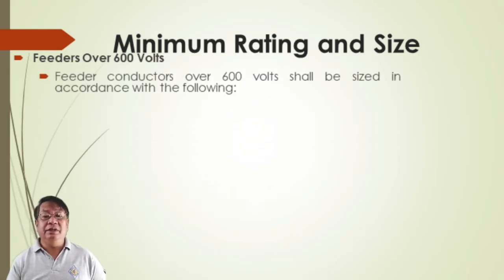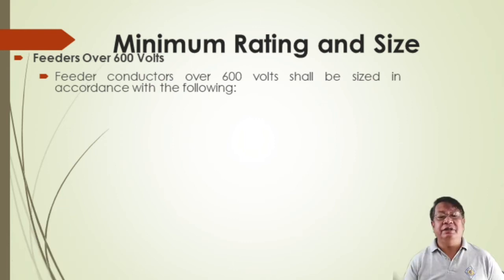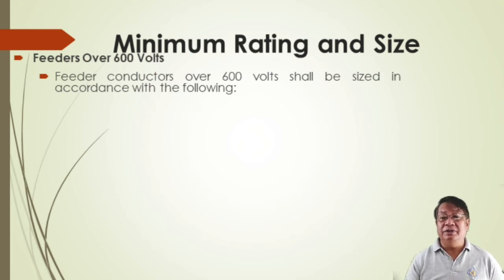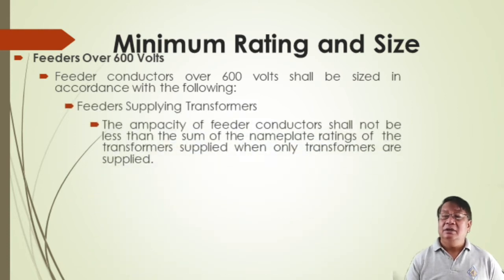If it is over 600 volts, feeder conductors over 600 volts shall be sized accordingly. For feeder-supplied transformers, the ampacity of feeder conductors shall not be less than the sum of the nameplate ratings of the transformers when only transformers are supplied.